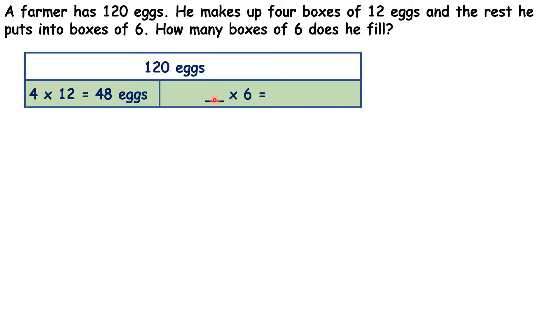The first step is to work out how many eggs he's putting into boxes of 6. He started with 120 eggs, but he's already used 48 of them. So if we work out 120 minus 48, and you might need to use column subtraction for this, you can work out that he has 72 eggs left.